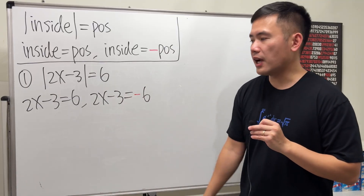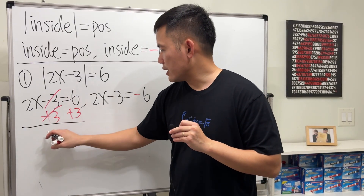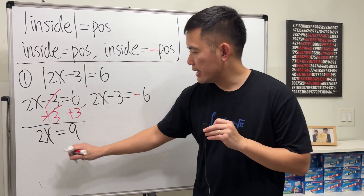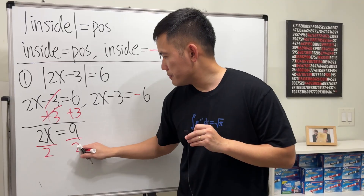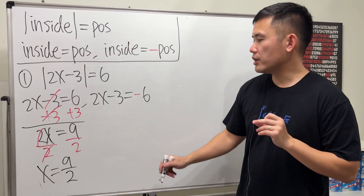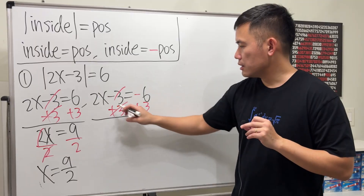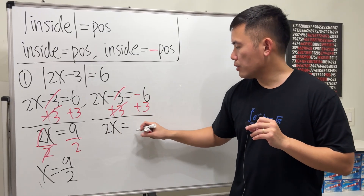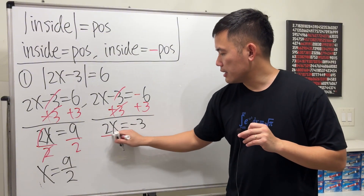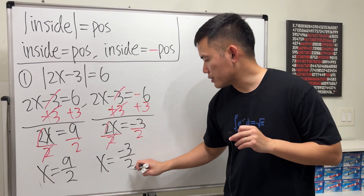Solving both equations: for the first, add 3 to both sides to get 2x equals 9, then divide by 2 — first answer is 9/2. For the second equation, add 3 to both sides: 2x equals negative 6 plus 3, which is negative 3, then divide by 2 — second answer is negative 3/2.